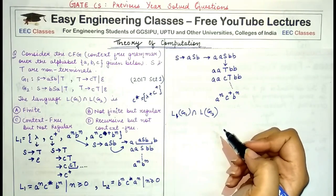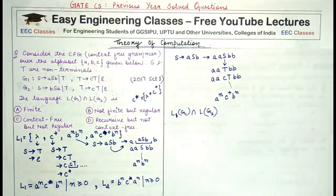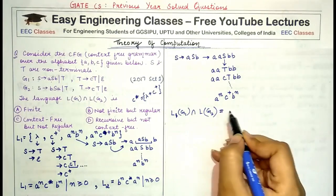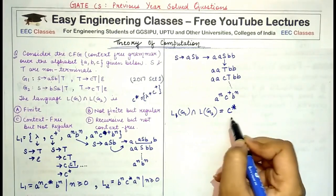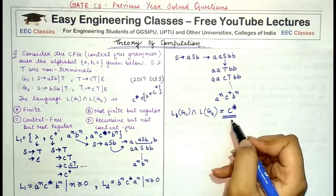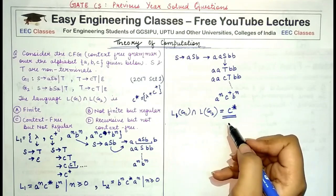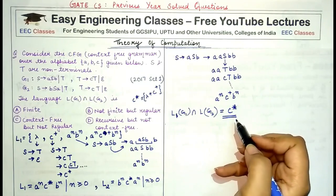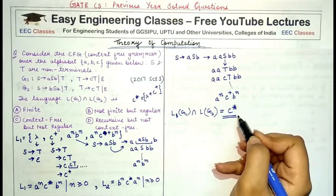The only common thing between these two languages is the case when n becomes zero. When n equals zero in both languages, the a's and b's disappear and the only thing left is c*. C* is a regular language — you can generate a DFA to express it or write a regular expression for it.